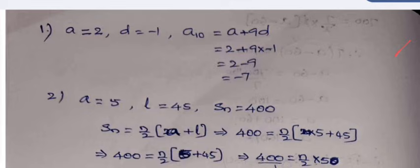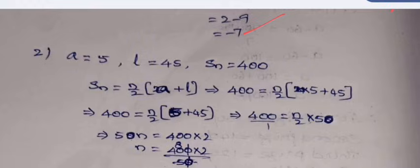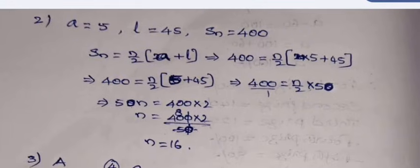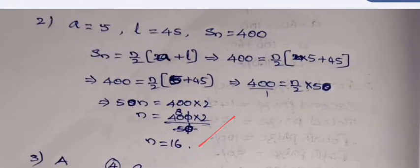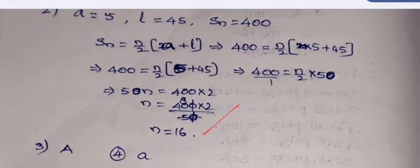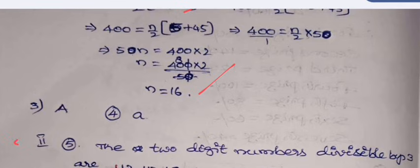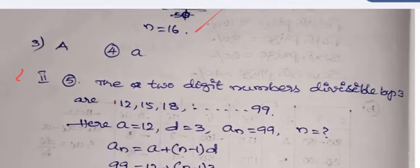The answers are: For the first question, the answer is a₁₀ is minus 7. For the second one, what is n? n is 16. It is calculated using the formula Sₙ is equal to n by 2 times a plus l because the last term l is given here. In the third question, answer is A. For the fourth question also, the answer is A.